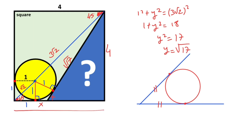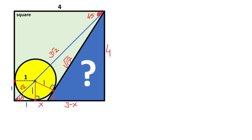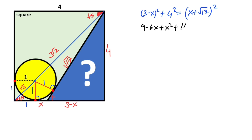We know that this side is 4 units, so 3 minus x is left here. For this triangle, if we apply the Pythagorean theorem: (3 minus x) squared plus 4 squared equals (x plus root 17) squared. Therefore, 9 minus 6x plus x squared plus 16 equals x squared plus 2x root 17 plus 17.